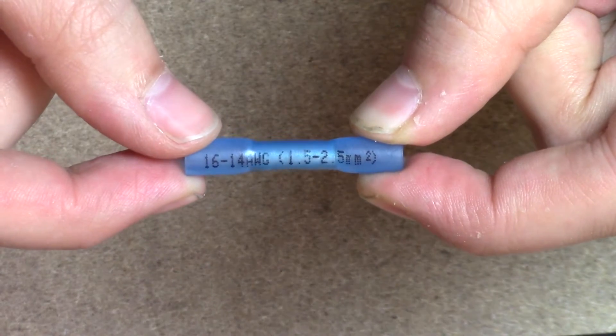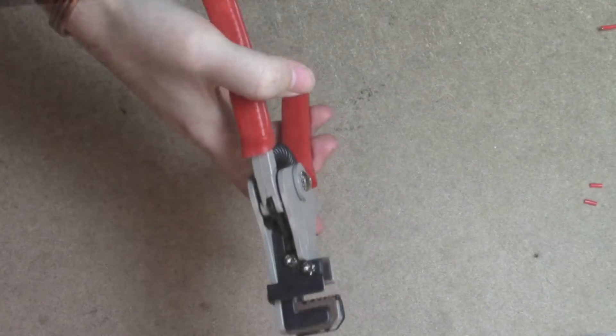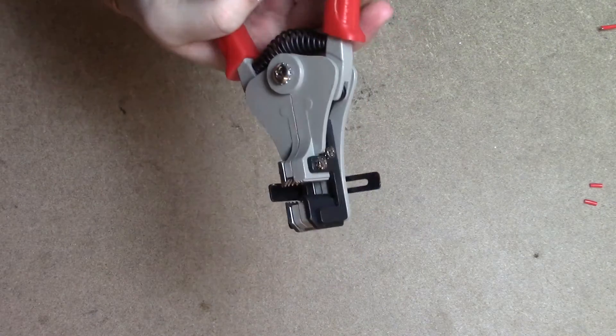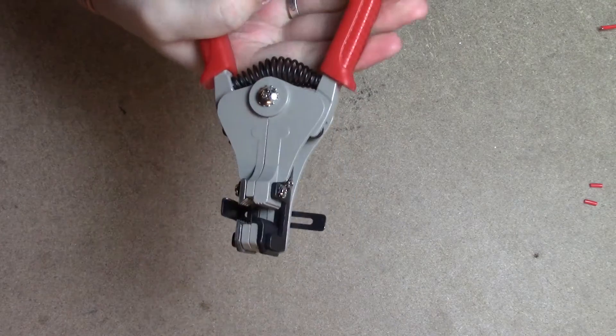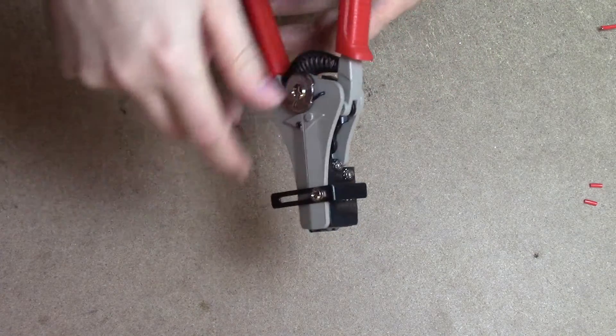We will start with our blue heat shrink terminal, and this one is for 1.5 to 2.5mm square cable. We're going to use our automatic wire strippers. Now you can choose to strip your cable any other way, however we're going to be using this method as it produces a clean cut.